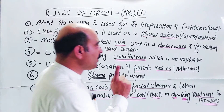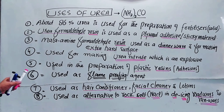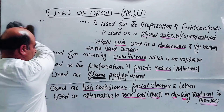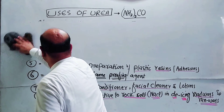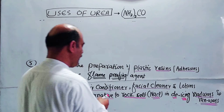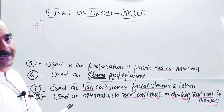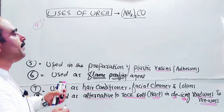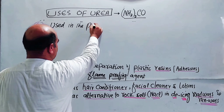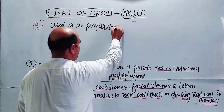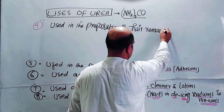Students, we have covered 8 uses so far. Use number 9: urea is also used in making creams — specifically hair remover creams. Urea is used in the preparation of hair remover creams.